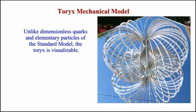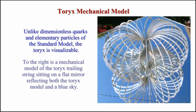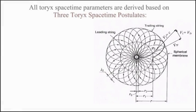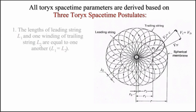To the right is a mechanical model of the toreses trailing string sitting on a flat mirror reflecting both the toreses model and the blue sky. All toreses trailing spacetime parameters are derived based on three toreses trailing spacetime postulates.